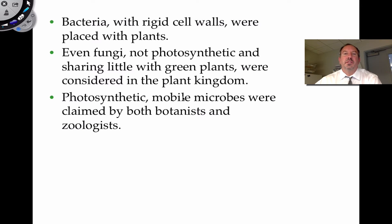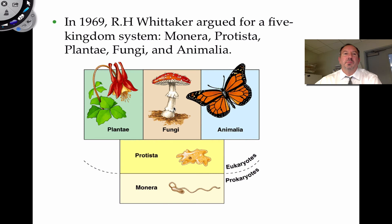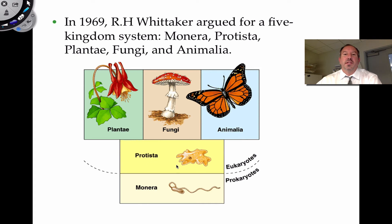In 1969, a five-kingdom system emerged: kingdom Monera for prokaryotes like bacteria; Protista, largely single-celled eukaryotic organisms — sort of the junk drawer of classification, anything not clearly a plant, fungus, or animal; then plants, fungi, and animals. Those are the five kingdoms.